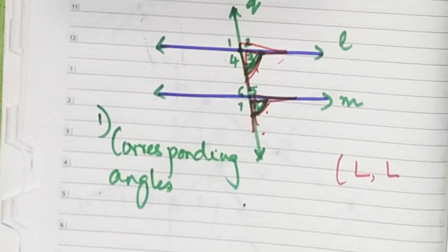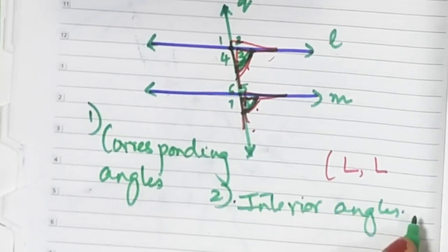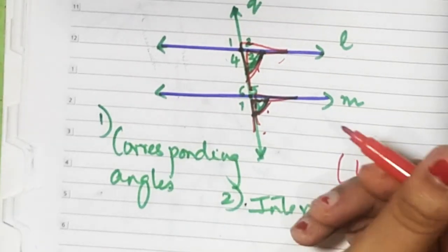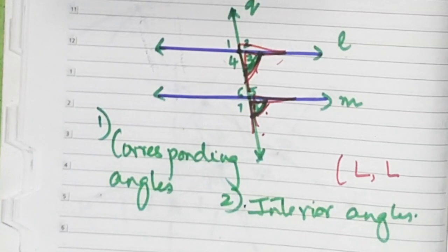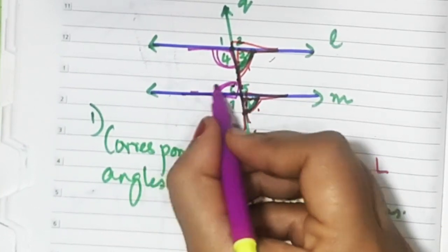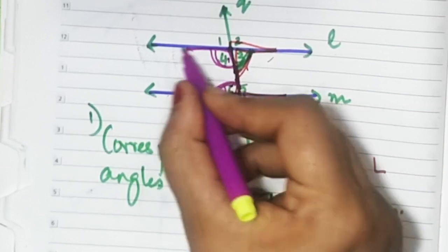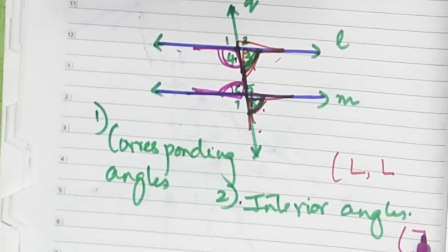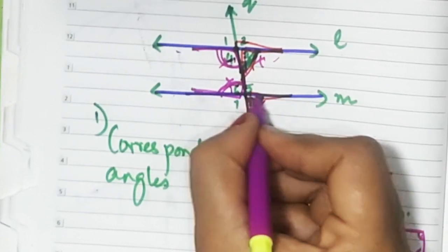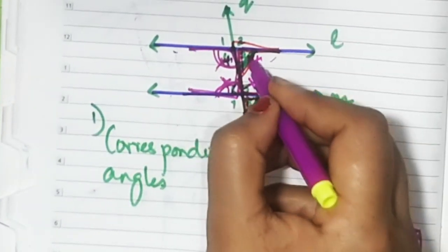The next type is interior angles. Interior angles are pairs of angles which are on the same side of the transversal and inside the given lines. For example, angle four and angle six are inside — so they are interior angles. Remember the letter C: you can see a C formed here and a C here, so these two pairs are interior angles.